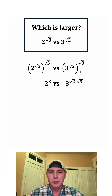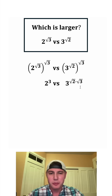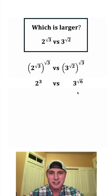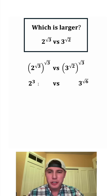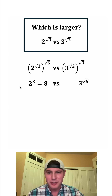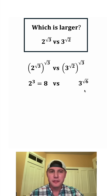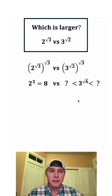On the right-hand side, square root of two times square root of three is square root of six, so we get three to the square root of six. Two cubed is equal to eight — that one's not too tough. I'm not sure how to evaluate three to the square root of six directly, but I do know how to give it a range of values.